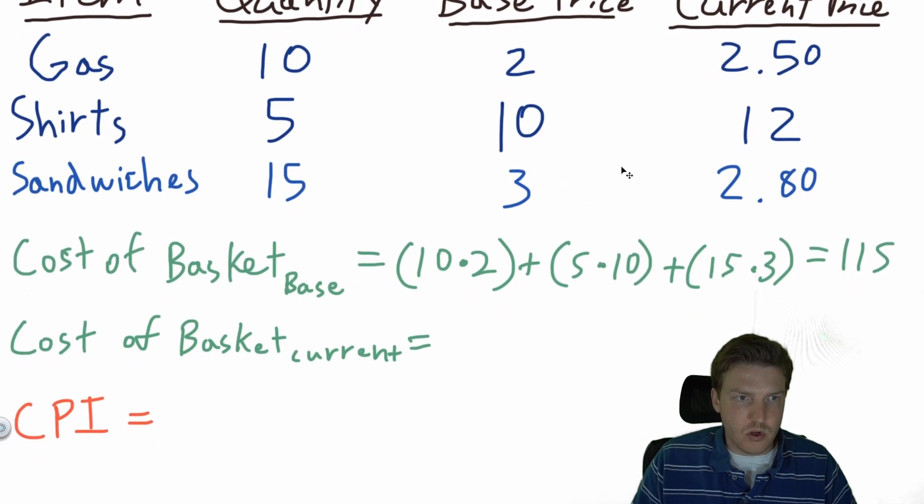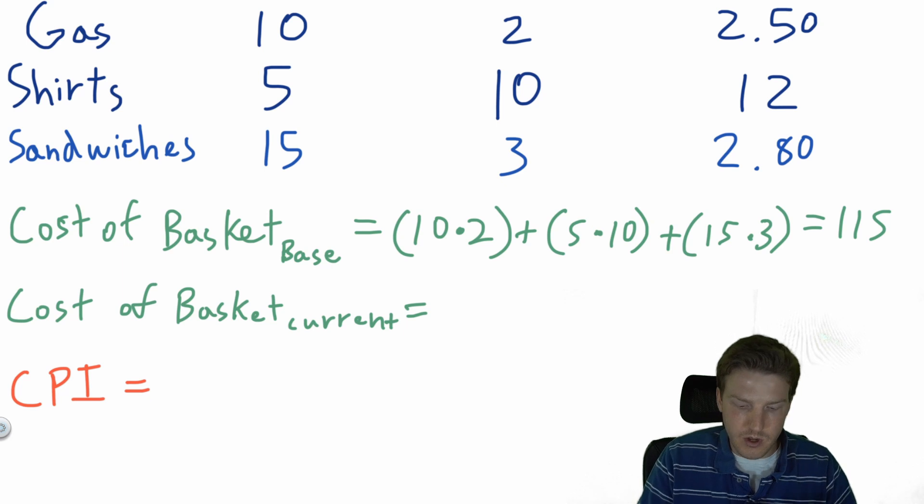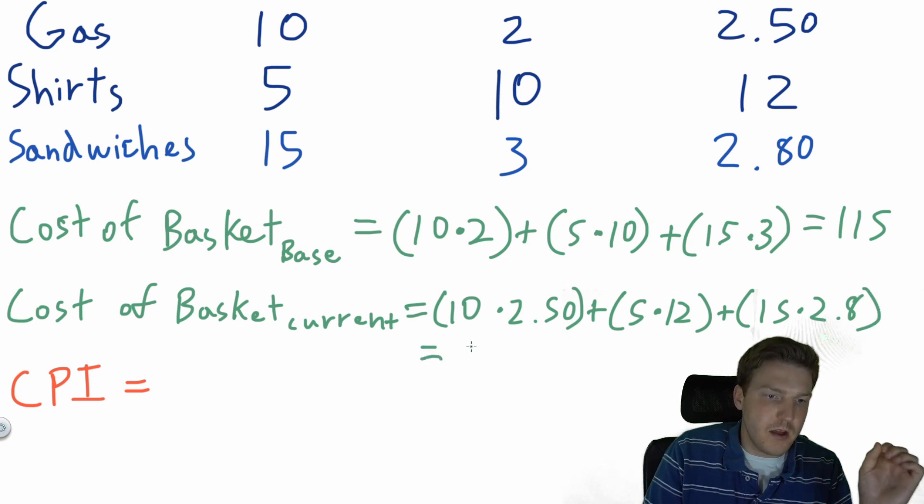Now we're going to calculate the cost of the basket at the current prices. It's going to be still the same 10 gallons of gas, but now it's $2.50 a gallon. And then it's also going to be 5 shirts, but now the shirts cost $12. And 15 sandwiches, but the sandwiches now cost $2.80. This is going to give us a cost of the basket at the current prices of $127.